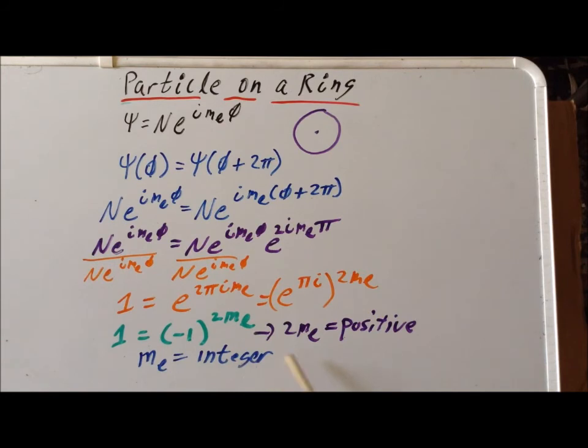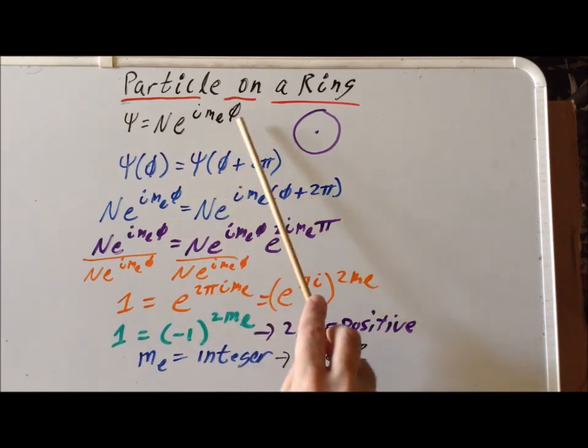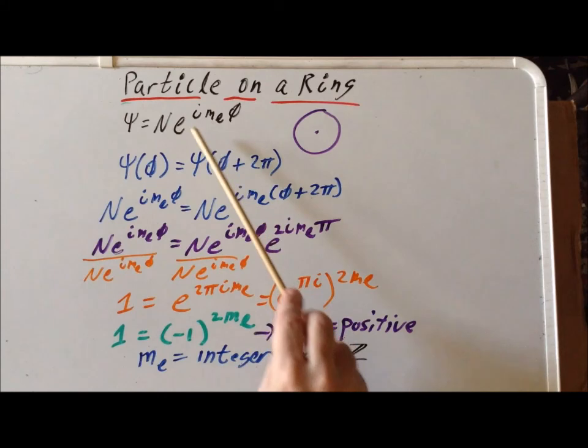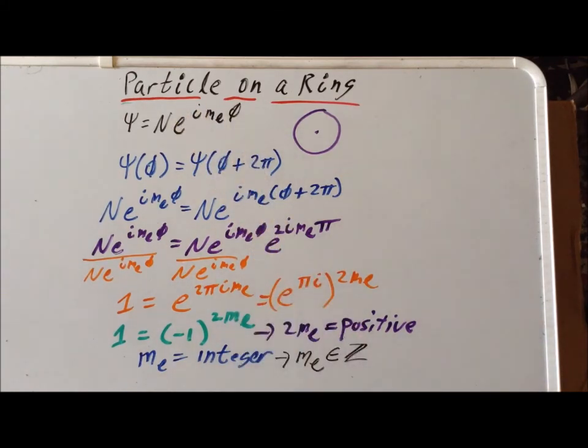So another way of writing the exact same thing is to write it this way: m sub l, and then we use the element sign, so it means it belongs to the set, and then we write a kind of fancy stylized Z. And Z is the set of integers. So that tells us that for this to be a valid wave function for the particle in the ring, not only is psi equal to N times e to the i m sub l phi, but m sub l can only have integer values. I thank you very much for your attention. Have a good one.